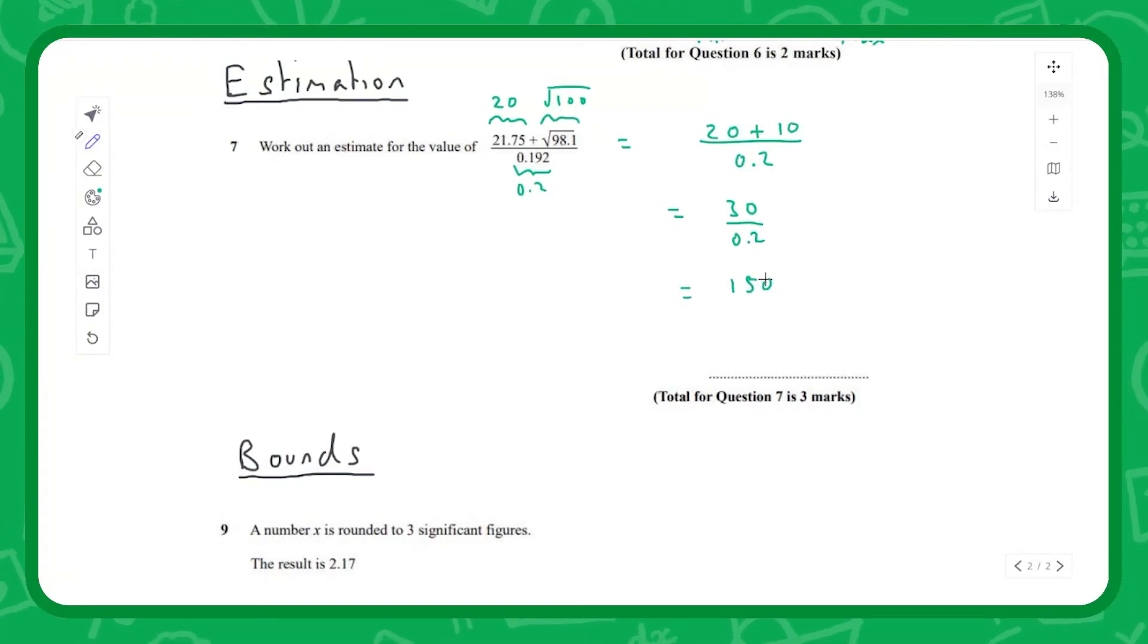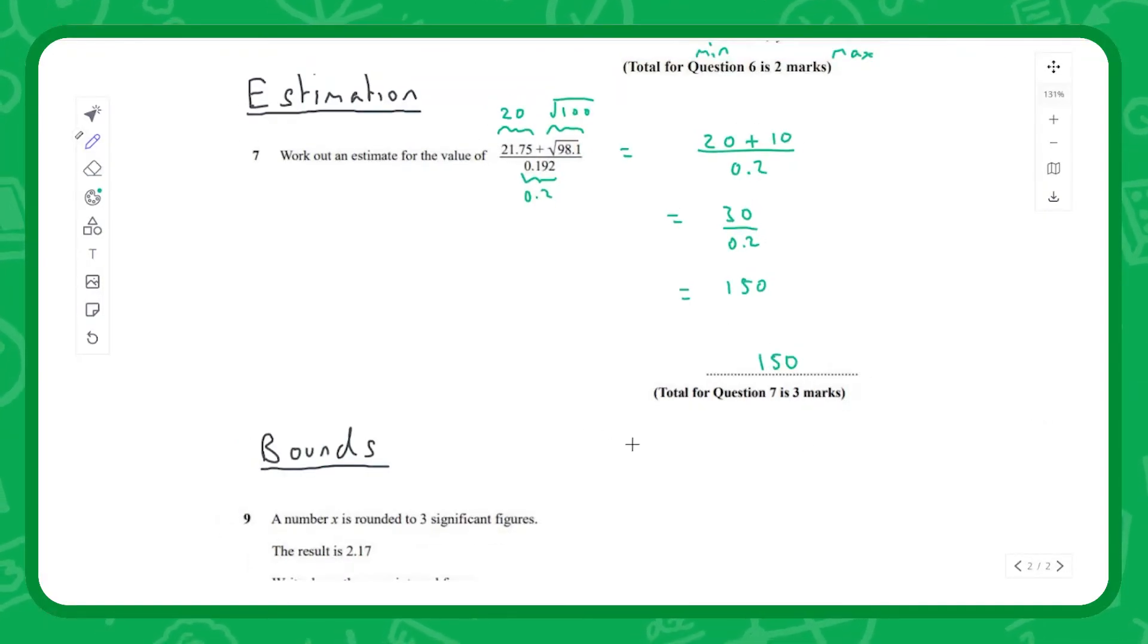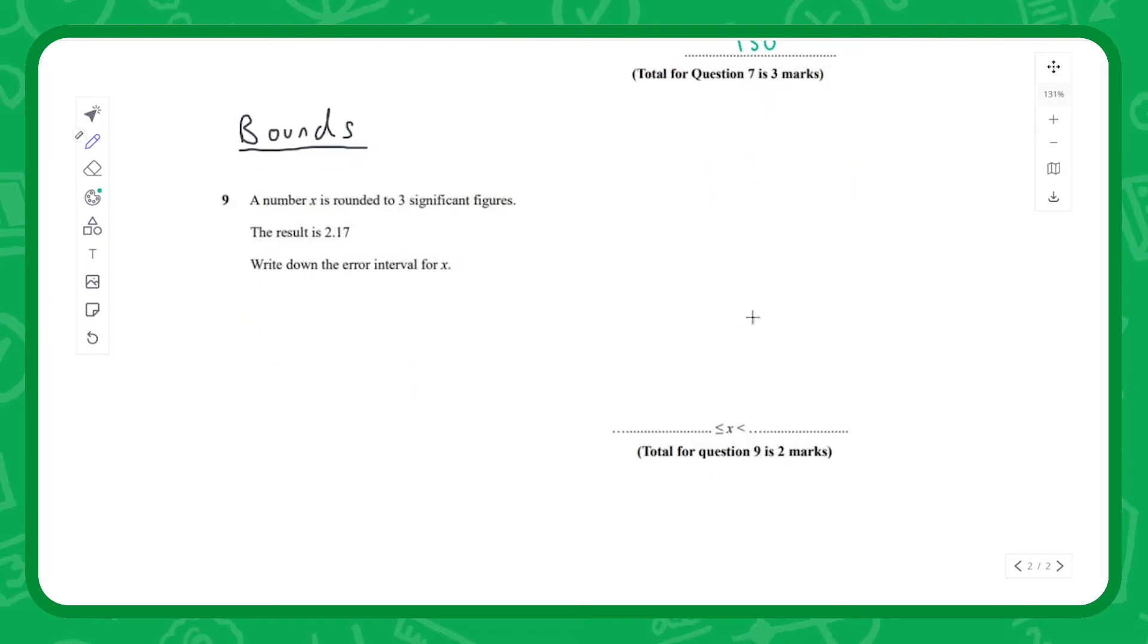Finally, the very last subtopic - bounds. x is rounded to 3 sig fig, the result is 2.17. So we know our number line is going to be counting up in terms of the third significant figure column. So 2.17 is going to go here, directly below it it's going to be 2.16, and directly above it it's going to be 2.18.